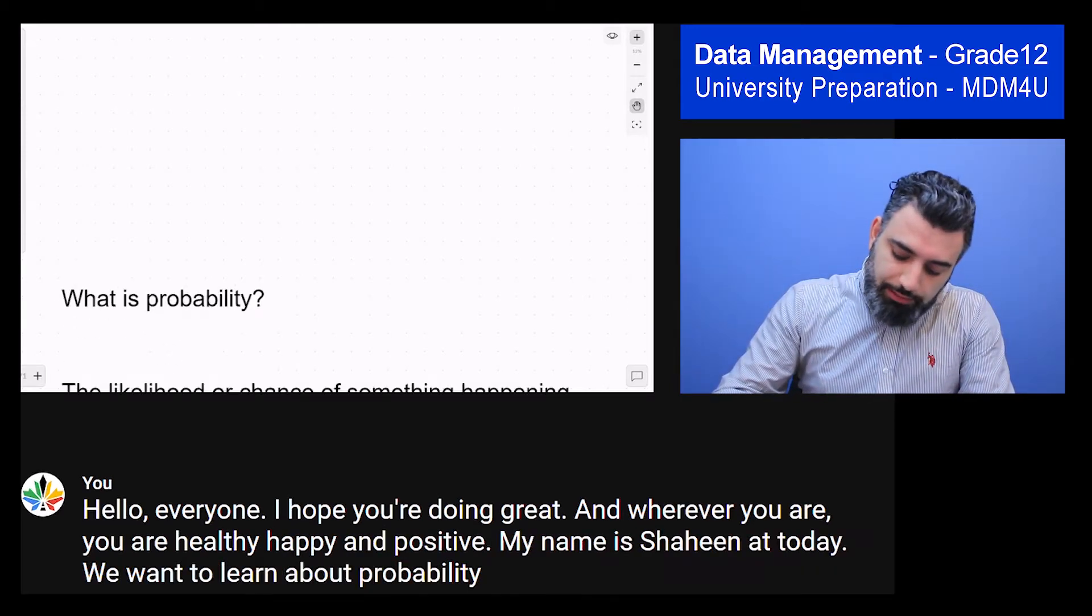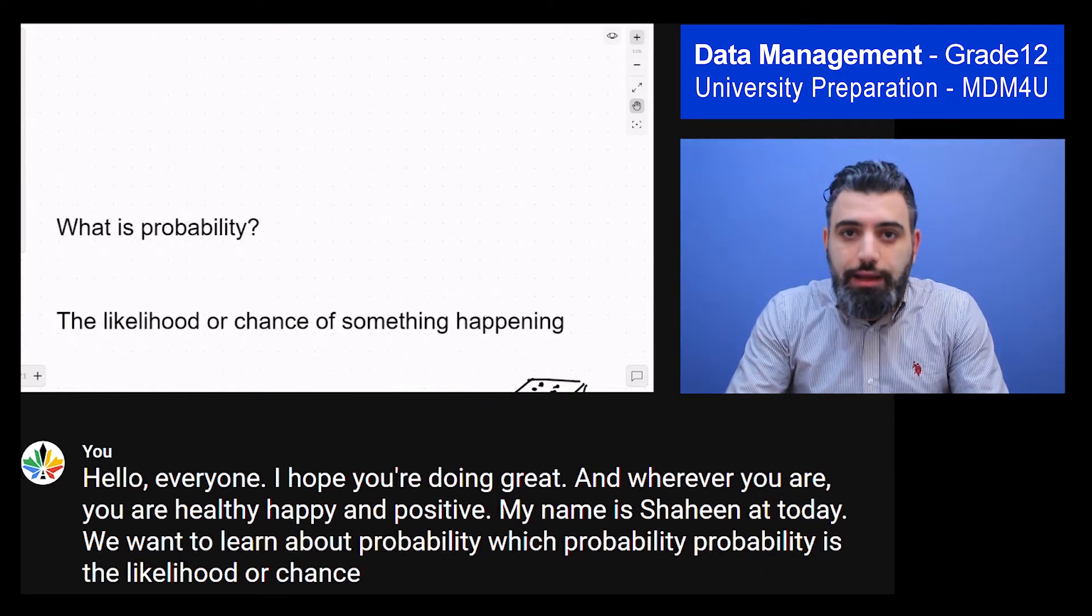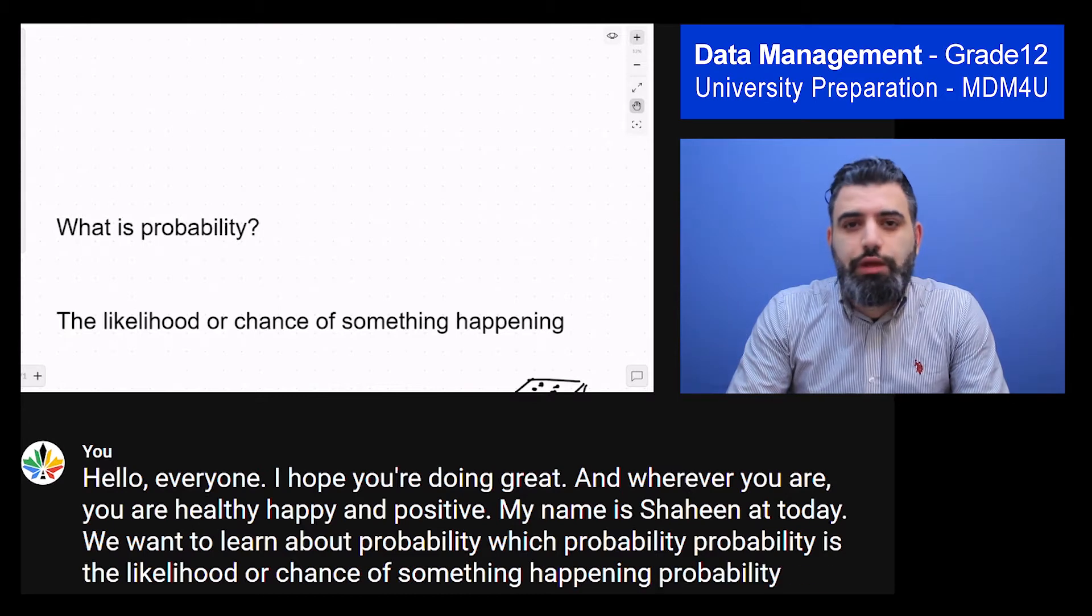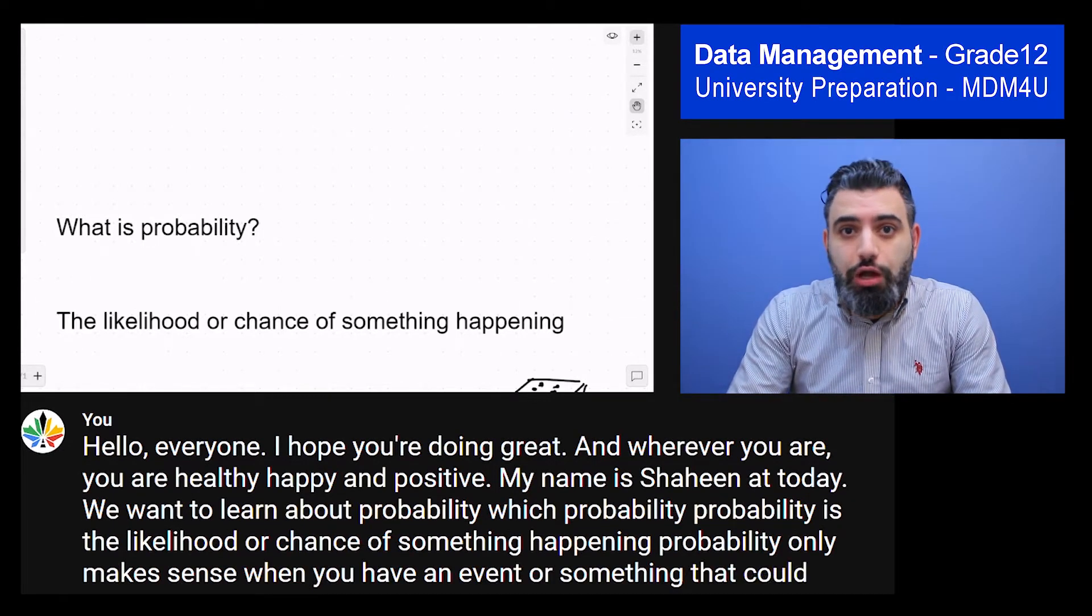What is probability? Probability is the likelihood or chance of something happening. Probability only makes sense when you have an event or something that could have different outcomes.